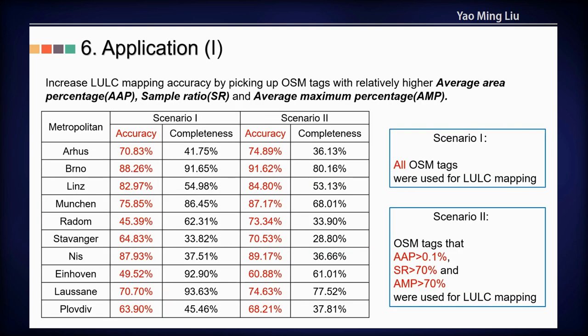How can we use the dictionary? There are three possible applications. The first is increasing land use land cover mapping accuracy. For example, in Scenario 1 we use all the OSM tags in the dictionary for mapping, and in Scenario 2 we set screening thresholds for three measures. Accuracy will then increase for all the test areas.